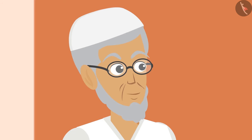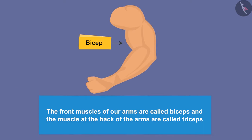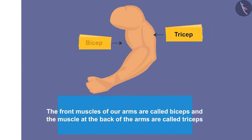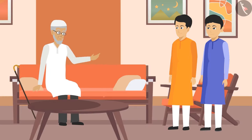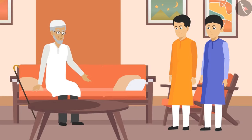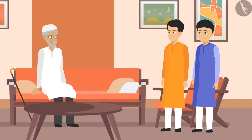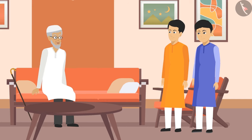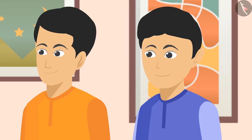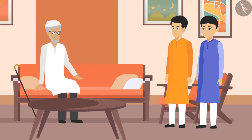'Well done! The front muscles are called biceps and the muscles at the back of the arms are called triceps.' 'Okay, now explain — can we bend or rotate our body parts like hands and legs at places other than the joints? No. Then how are we able to bend and rotate our body parts at the joints?'